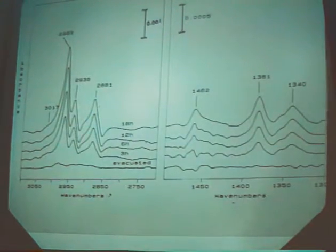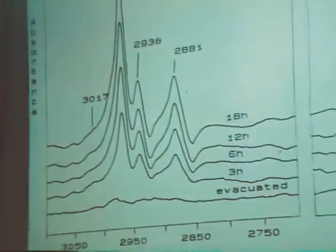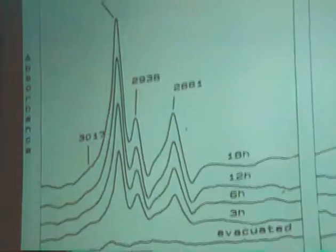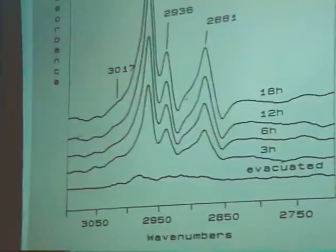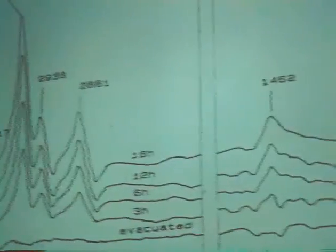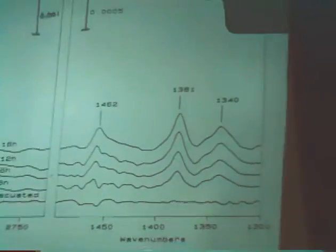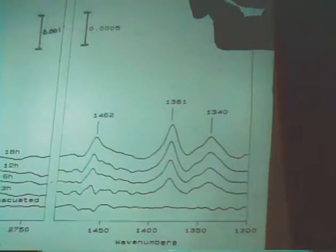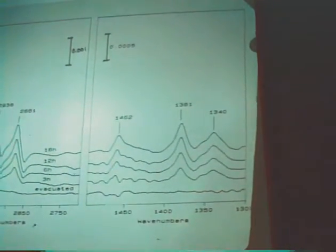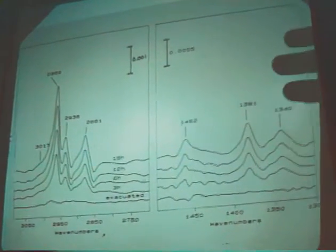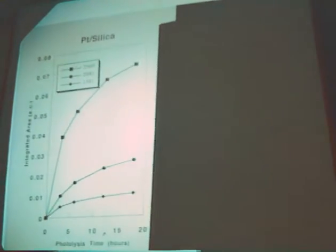We can photolyze for longer periods of time, start to build up a larger amount of ethyl groups, so then we can go on and study the chemistry of these groups on the surface. This band here at 1340 wavenumbers is due to ethylidyne, and I'll talk a little bit more about that in a few moments. So we see that we can make a fair amount of these groups on the surface, and then study their chemistry, and we're currently working on that. These are the growth curves obtained after time.